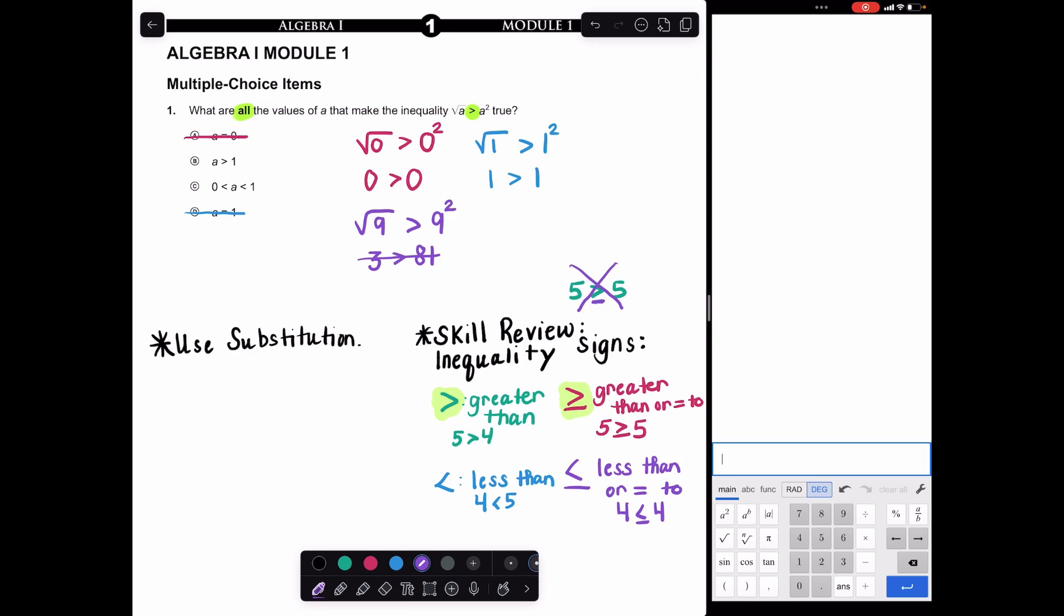Whether I plug in 1.01 or 1,001, if I take the square root, it's going to be smaller than if I square it. So I can cross off option B. Honestly, by default, we see that option C is our answer, process of elimination.